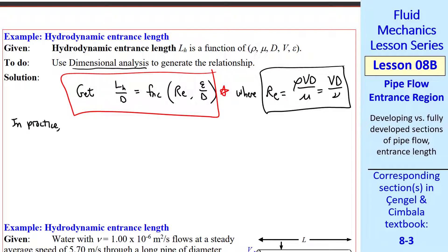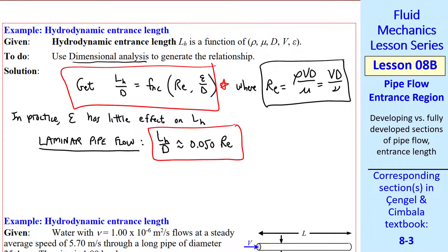It turns out, in practice, epsilon has little effect on L_h. So if we let L_h over d be a function of Reynolds number only, it's a reasonable approximation. Here are some experimental correlations, or empirical equations. The entrance length parameter, L_h over d, turns out to be 0.050 Reynolds number. Note that this is approximate.